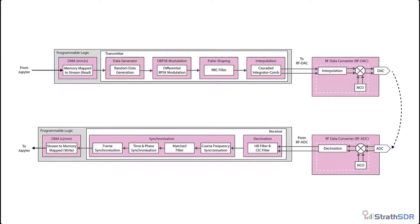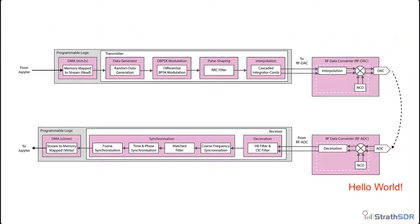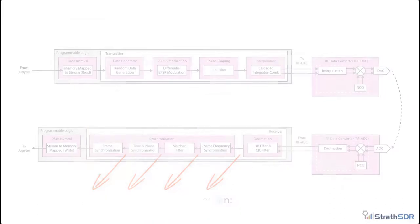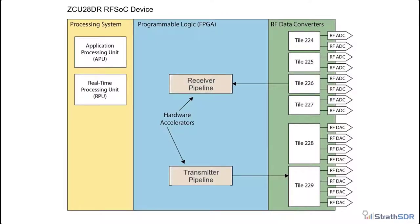Functionally, we would like the transmitter to be able to send a user-defined message, such as 'hello world'. At the receiver, we would like the message to be demodulated, synchronized, and the payload extracted for analysis. At several points in the receiver, we would also like to observe the signal through signal capture and visualization capabilities. To achieve this functionality, the PYNQ software framework is deployed on the RFSOC's Application Processing Unit.